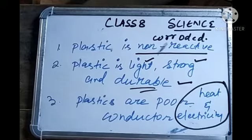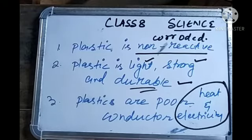Because plastics are poor conductors, they are used to make covers of electric wires. Also, when you look at a frying pan in your kitchen, the handles are made of plastic. The handles of screwdrivers are also made of plastics — all because of the property of being a poor conductor of heat.